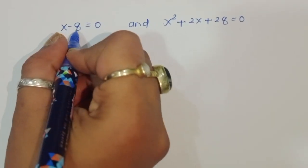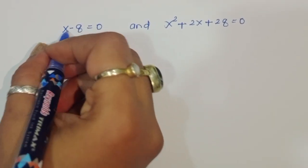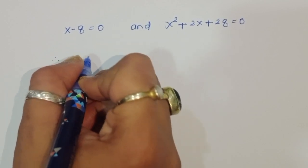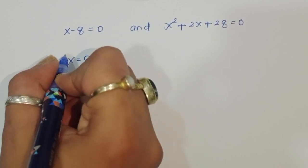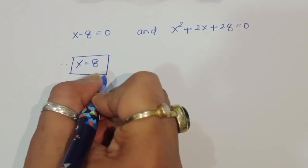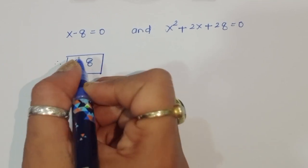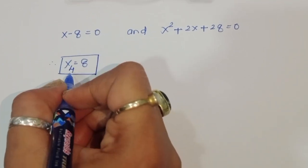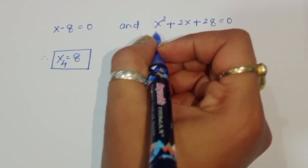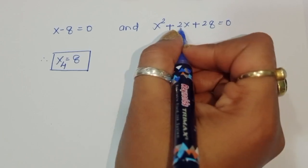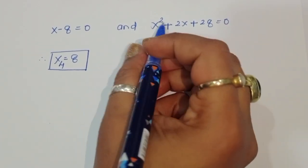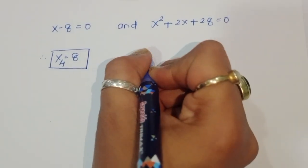From x minus 8 equals 0, we get x₄ equals 8. Since we already found x₁, x₂, x₃, this is x₄. Now for x² plus 2x plus 28 equals 0: coefficient a equals 1, b equals 2, c equals 28.